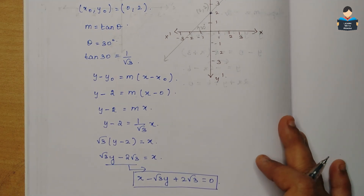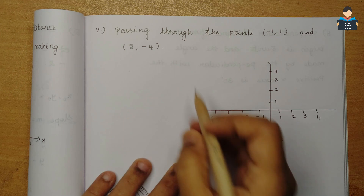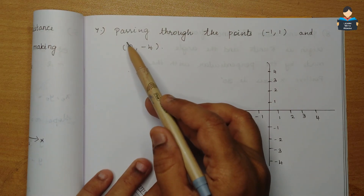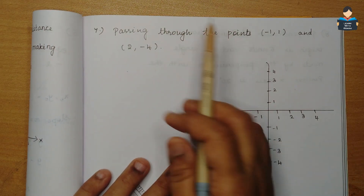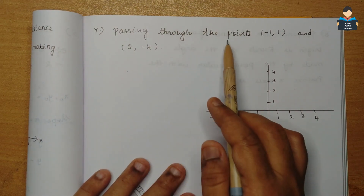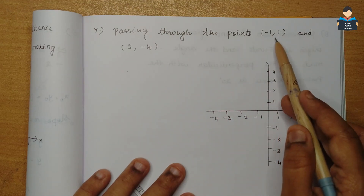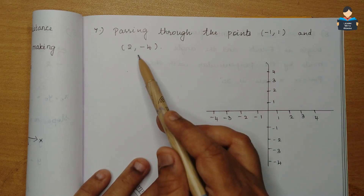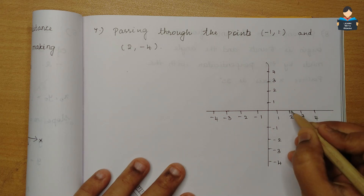Next is the 7th question. Equation of the line passing through the points minus 1, 1 and 2, minus 4.